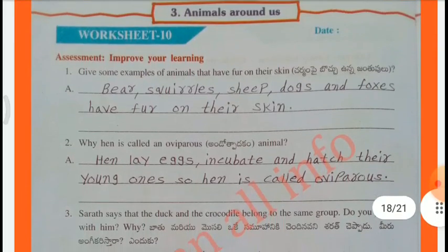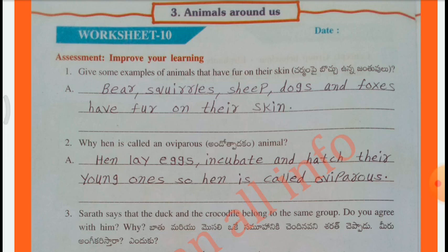Worksheet No. 10: Assessment - Improve your learning. Give some examples of animals that have fur on their skin. Bear, squirrels, sheep, dogs, and foxes have fur on their skin.